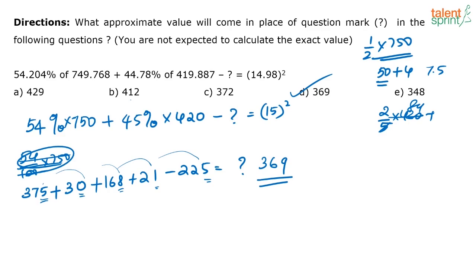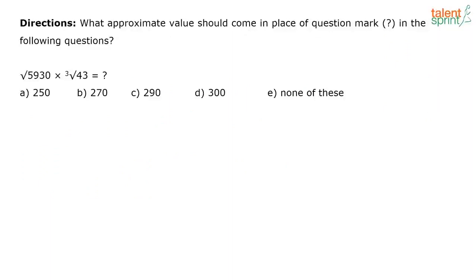The next one is on approximations: root of 5930 into cube root of 43 equals dash. Here, a fairly easy question - they are asking you for the approximate value. If you look at root of 5930, where will this come? Which are the closest roots here that we know? You know 80 squared is 6400. Then you have 75 squared. 70 squared you know is 4900, but we also know what is 75 squared. 75 squared is 5625. 55's are 25, 7 into 8 is 56. Those of you who are new, to find out squares of such numbers which end with 5, there is a very easy method - please refer the speed math videos.